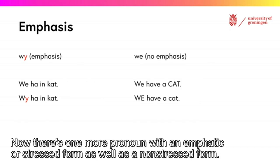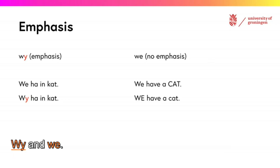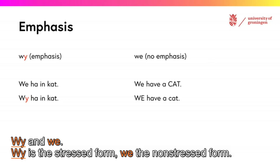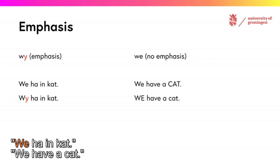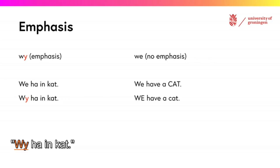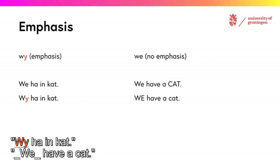There is one more pronoun with an emphatic or stressed form as well as a non-stressed form: 'they' and 'the'. 'They' is the stressed form; 'the' is the non-stressed form. 'They have a cat.' 'They have a cat.' 'We have a cat.'